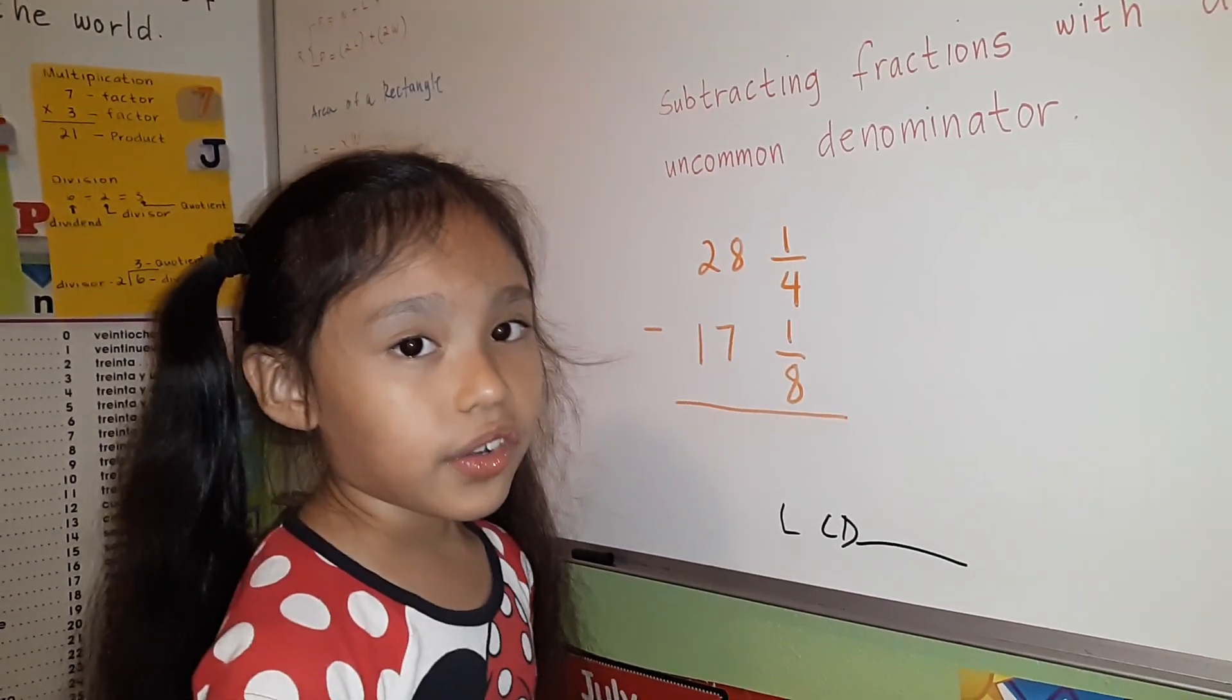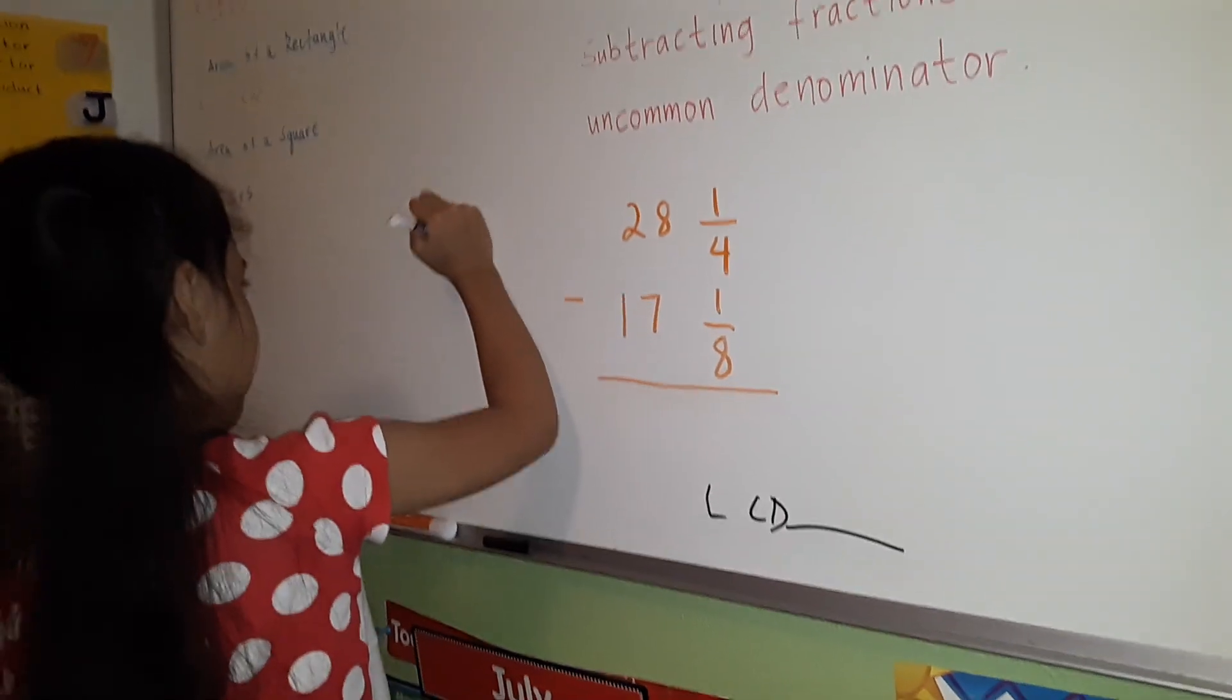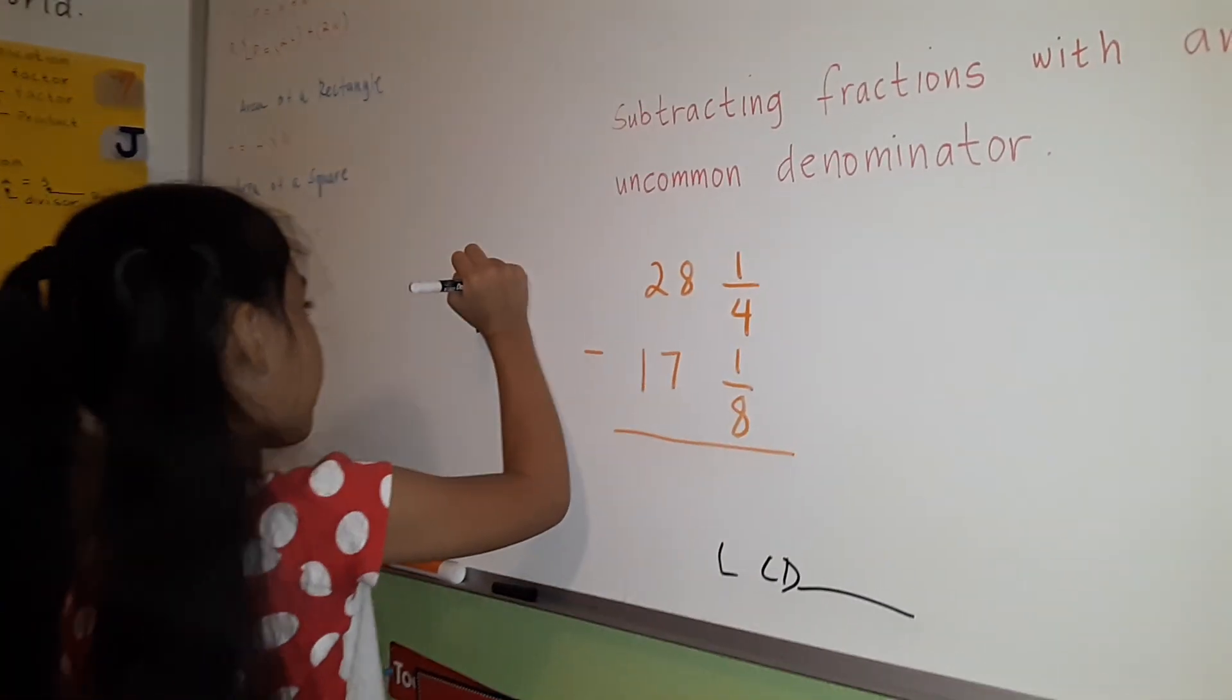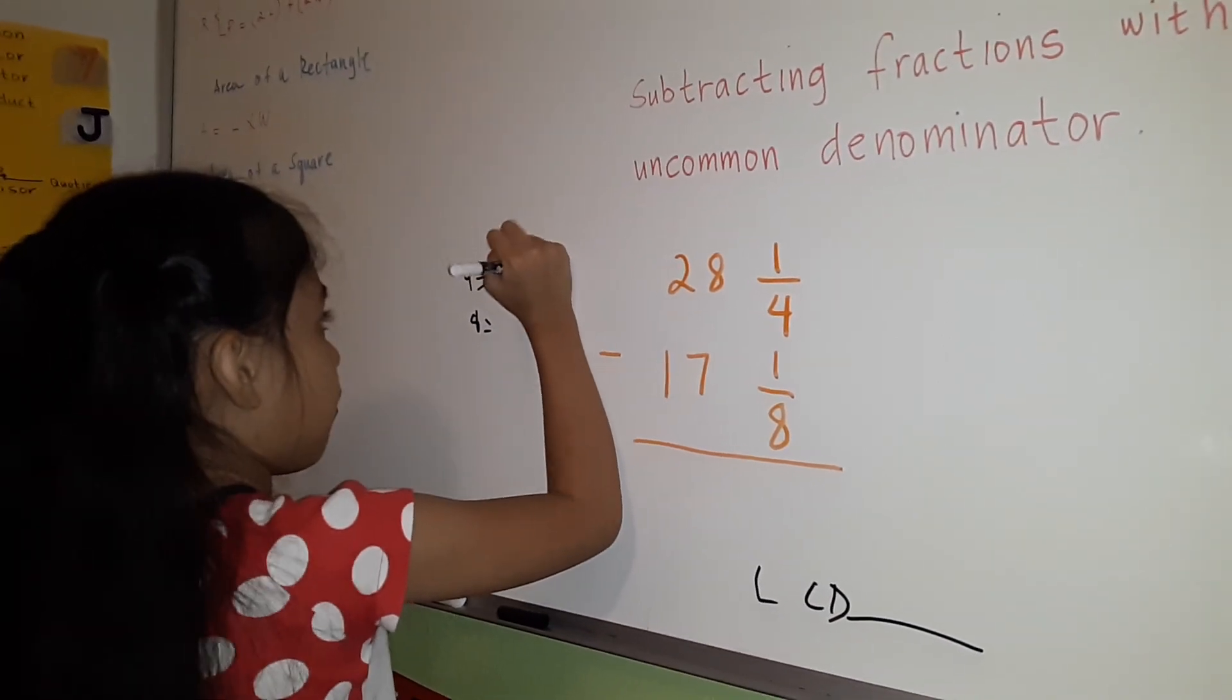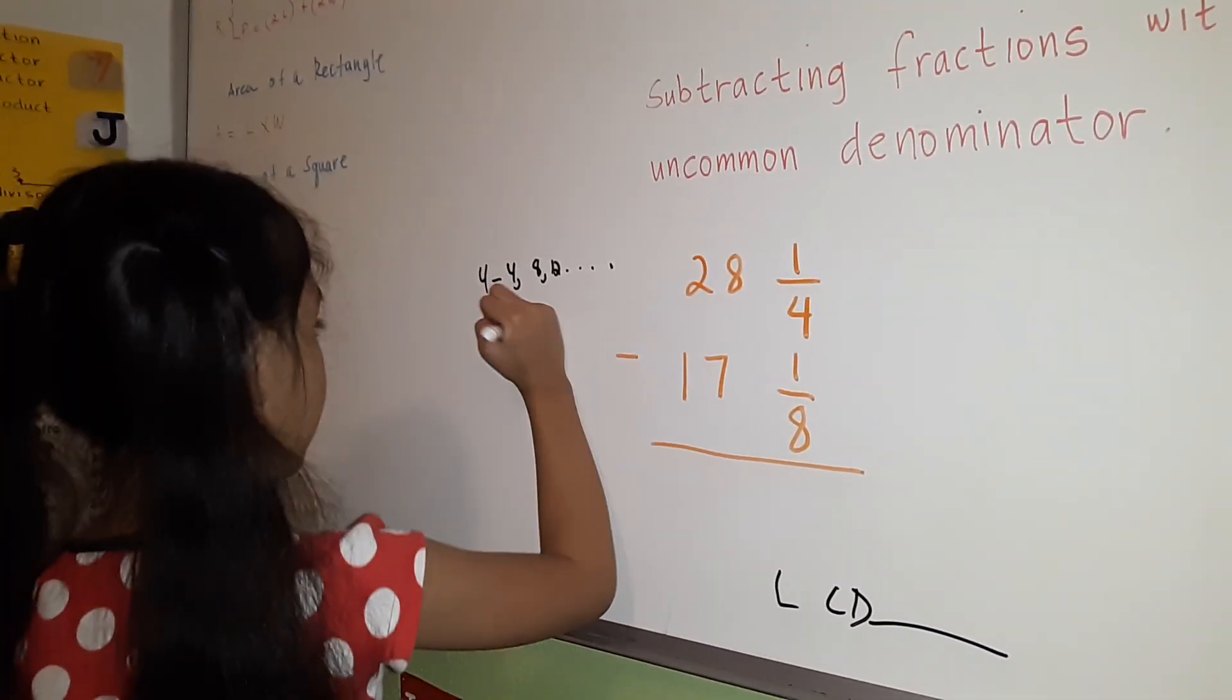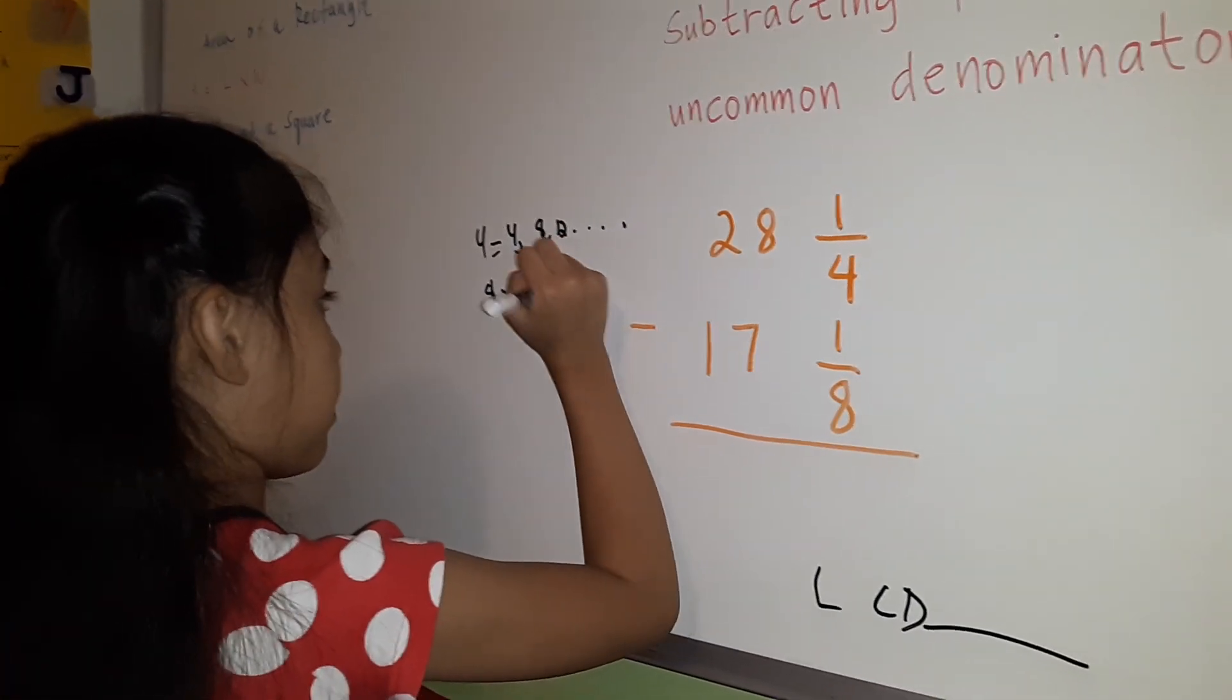To find the LCD of 4 and 8, we're going to use multiples. The multiples of 4 are 4, 8, and 12. The multiples of 8 are 8, 16, and 24.